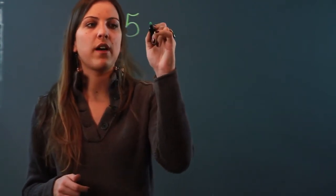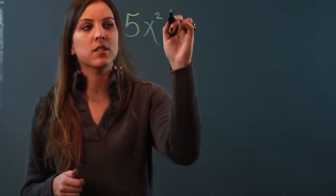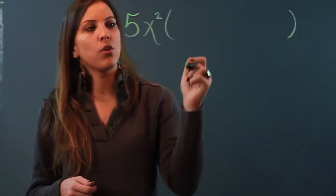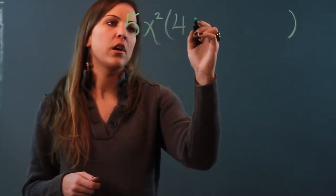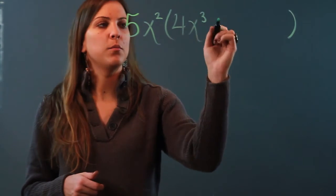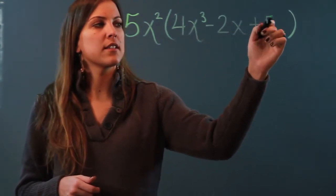A polynomial can be a monomial, binomial, trinomial or more terms. I'll start with a monomial, so it's simplistic. If I want to distribute the term 5x squared to the trinomial 4x cubed minus 2x plus 7...